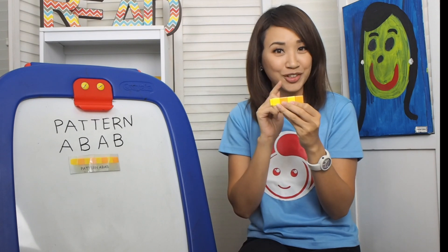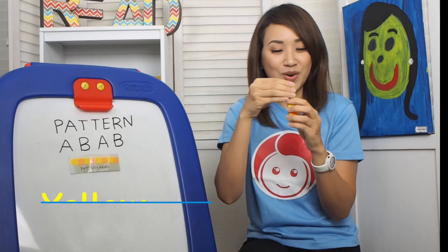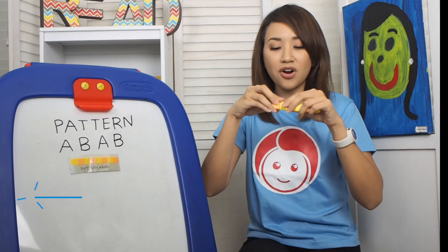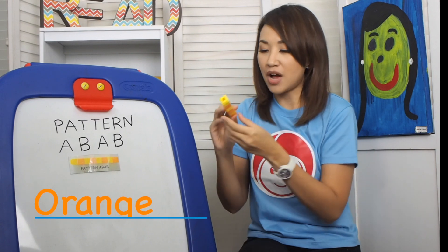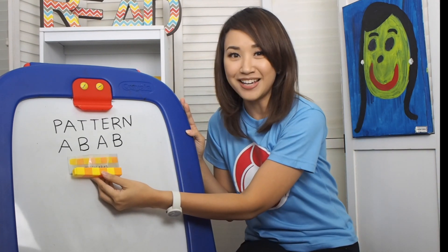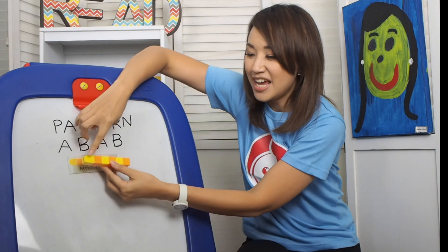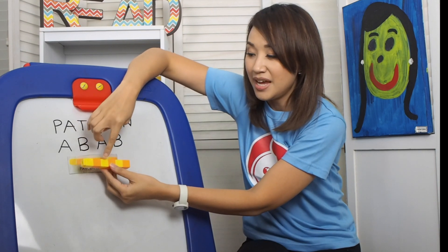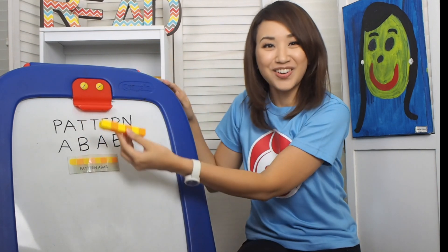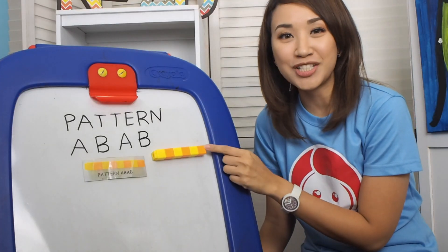What is after orange? Yellow. And what's after yellow? Very good, it's orange. Let's check our pattern. Is it A, B, A, B, A, B? A, B, A, B, A, B. Correct. We are done with our first example.